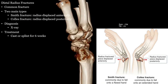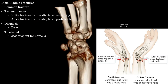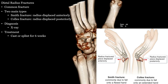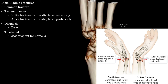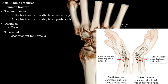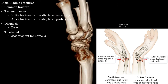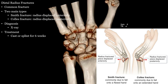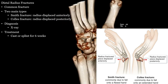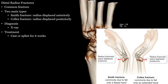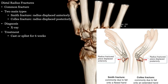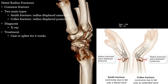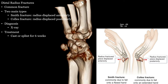Distal radial fractures of the wrist are very common when people fall forward and try to catch themselves with their hands. If you fall with an extended wrist trying to catch yourself, a Colles' fracture can occur. If you fall on your wrist while flexed, a Smith fracture may happen.